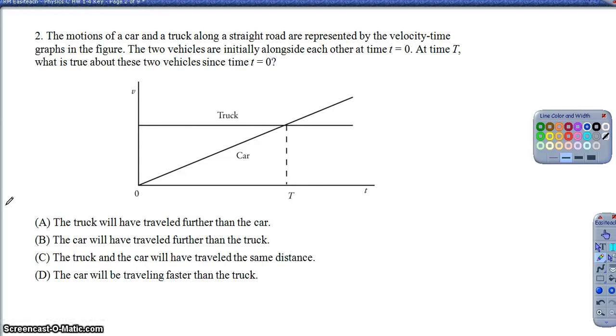Question two is a pretty standard representation. Do notice here it is a velocity versus time graph and not a position versus time graph. Okay, so the motion of the car and truck represented below. It says that at time of t equals zero, the two vehicles were right next to each other. So it does tell us that their initial positions were both the same. So then which of these following can we rule as true since t equals zero? So the truck will have covered more distance, the car will have traveled a further distance, the truck and car will have traveled the same distance, and the car will be moving faster.